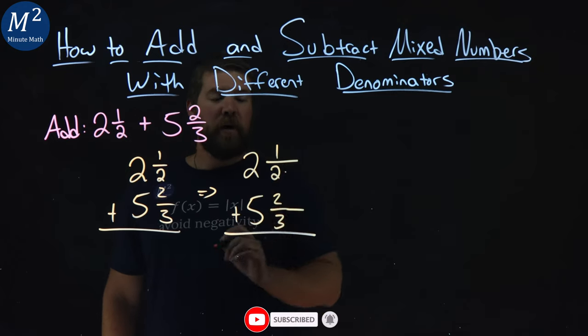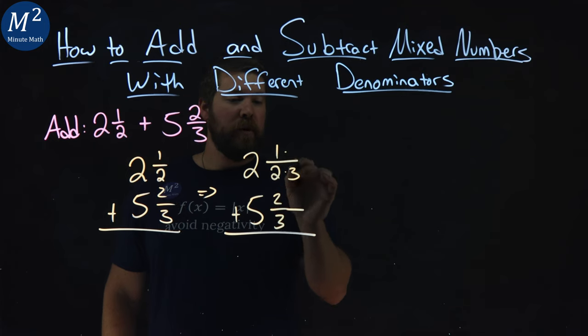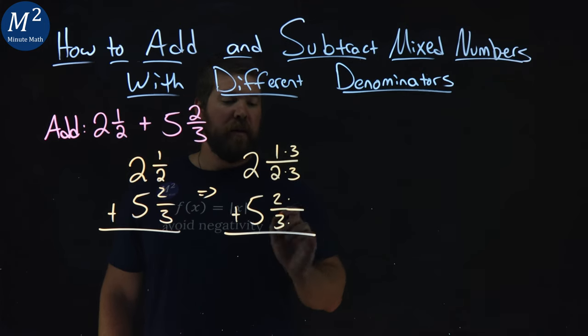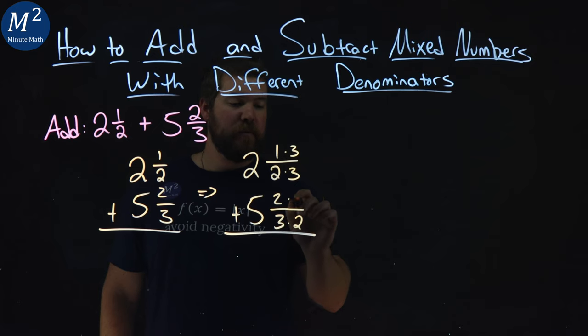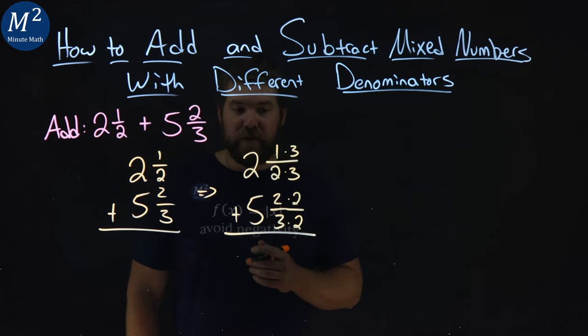The 1/2, I multiply the numerator and denominator both by 3. That gives me 6 in the denominator. And then 2/3 both by 2. 2 times 3 is also 6.